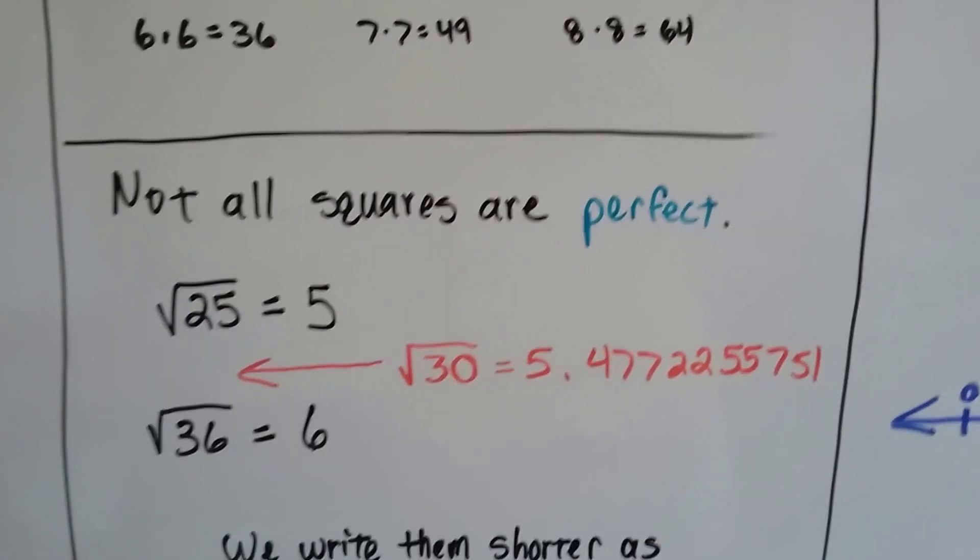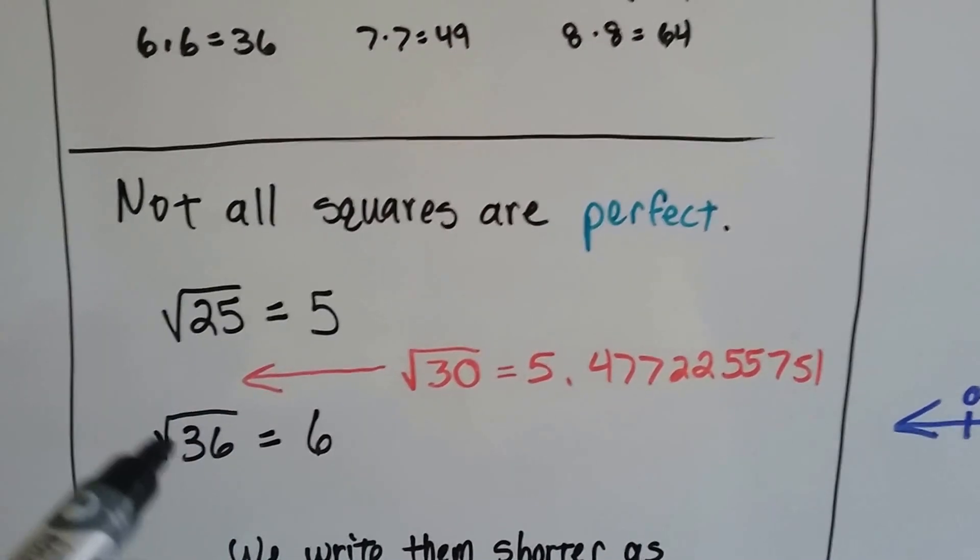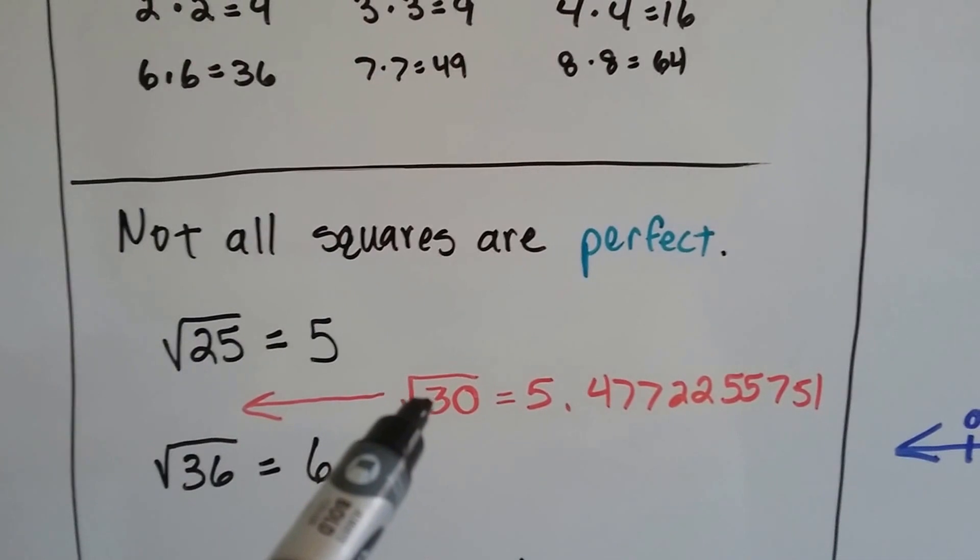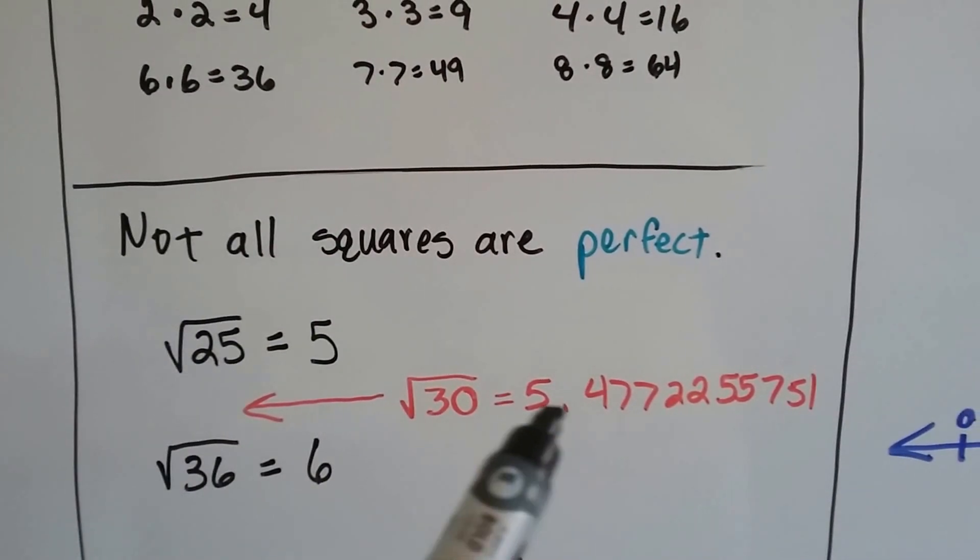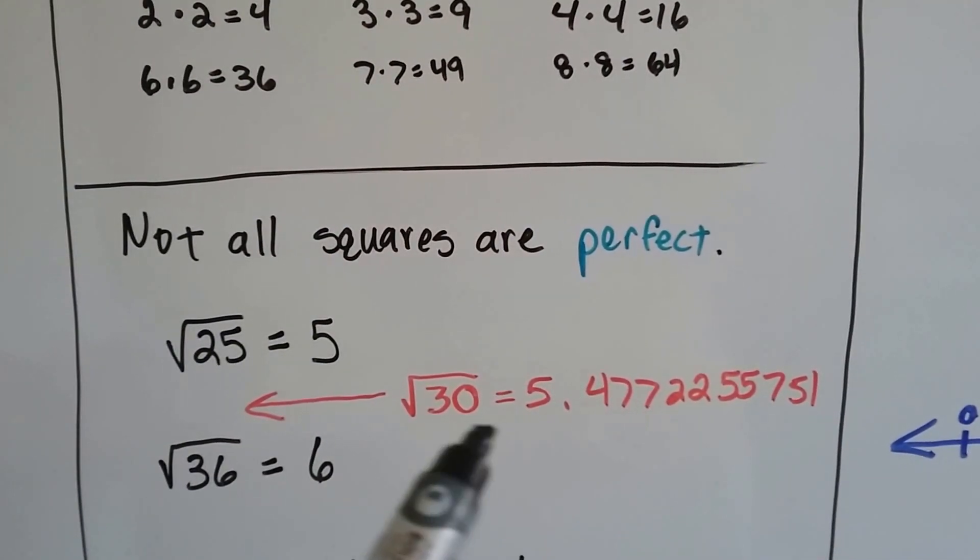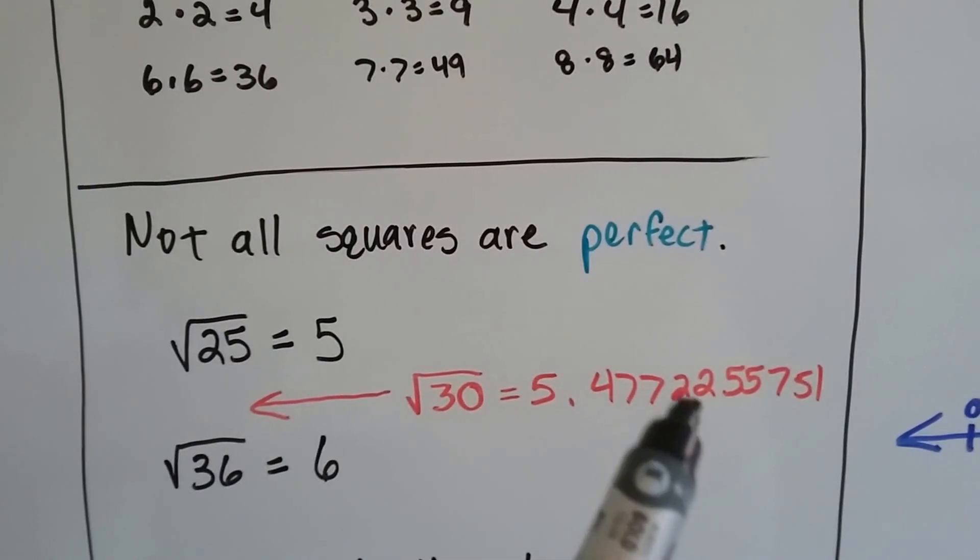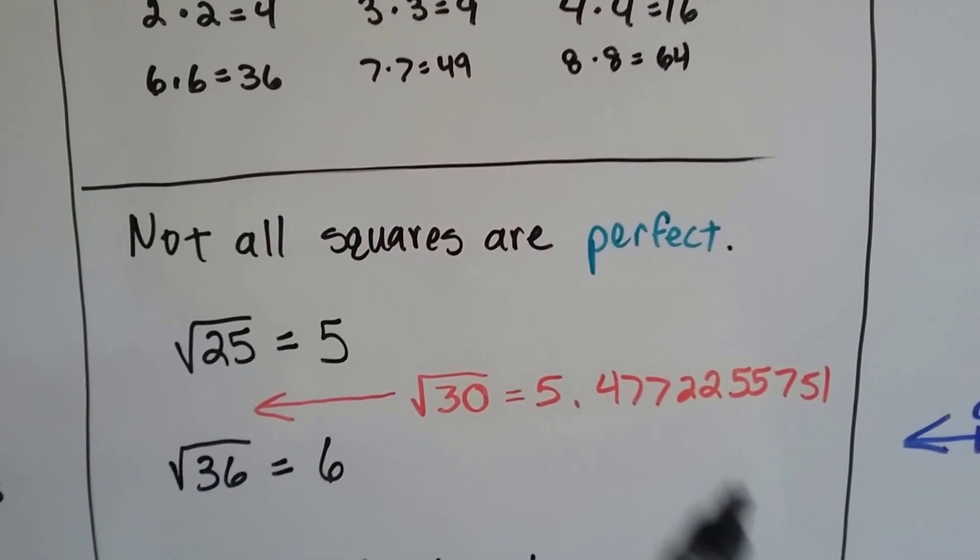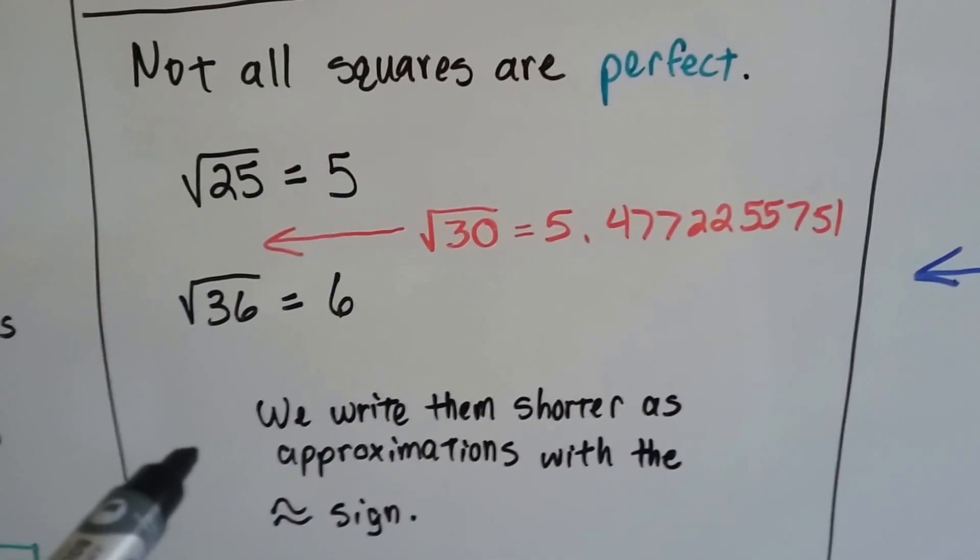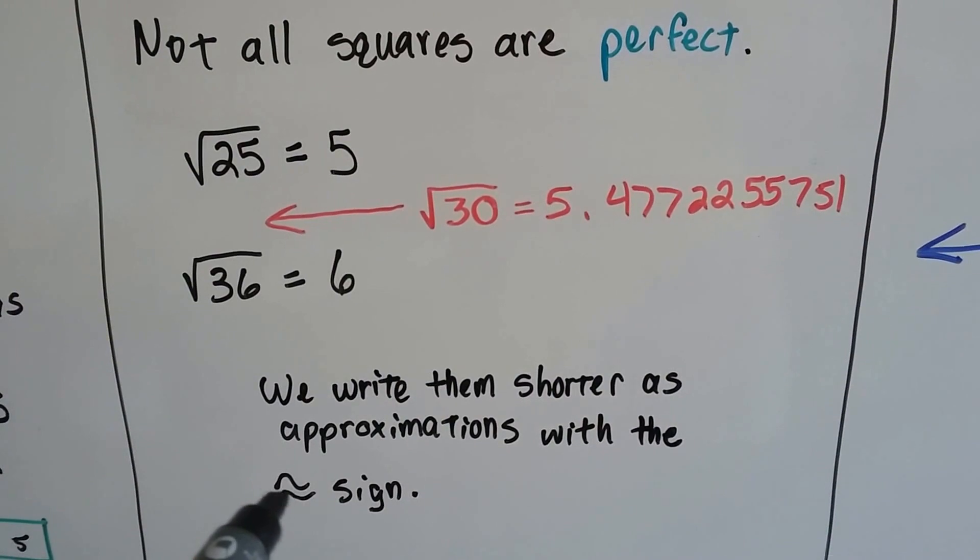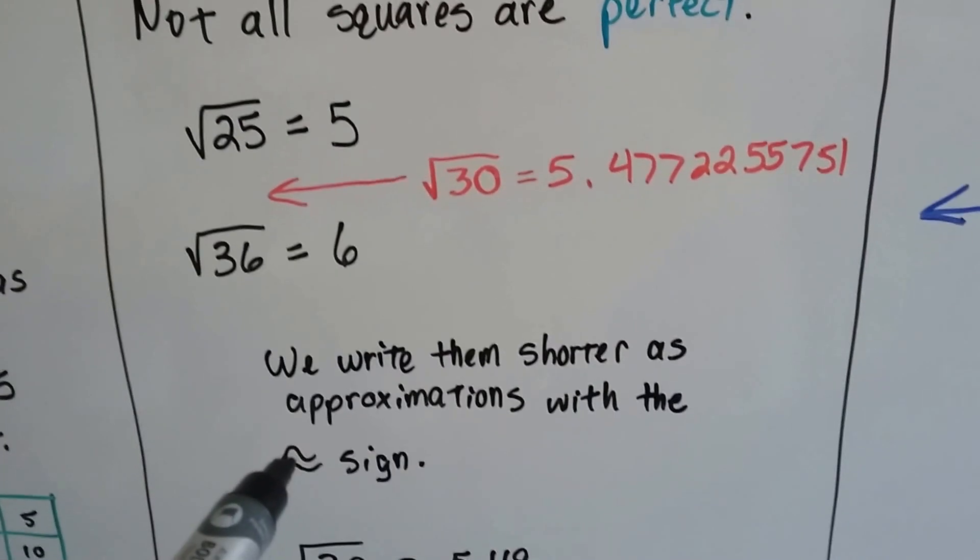But not all squares are perfect. The square root of 25 is 5 and the square root of 36 is 6, but what's the square root of 30? Well we could use a calculator to figure it out to get the exact number. The square root of 30 is 5.4772255751. We write them shorter as approximations with our double little squiggly line, our approximate sign.